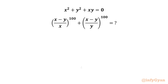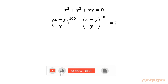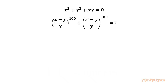Hello my dear friends, welcome back to Infigyan. Today in this video we have one very interesting question from algebra. We have to evaluate the expression (x minus y over x) whole power 100 plus (x minus y over y) whole power 100, given that x squared plus y squared plus xy equals 0.